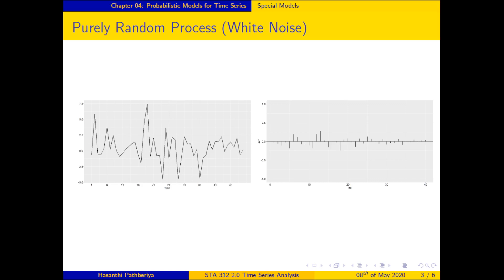Here is an example of a purely random process. The first plot is the time series plot and the second is the autocorrelation function (ACF). You cannot see any changes in the mean level, no trends, no change in variance, and no repeating patterns — only irregular variation with random fluctuations. This is how you identify a purely random process, also called a white noise process.